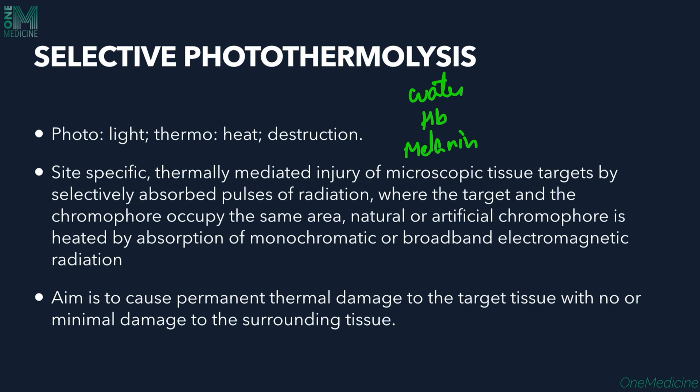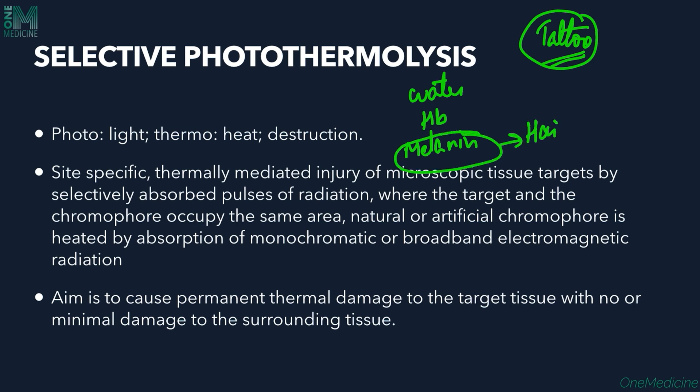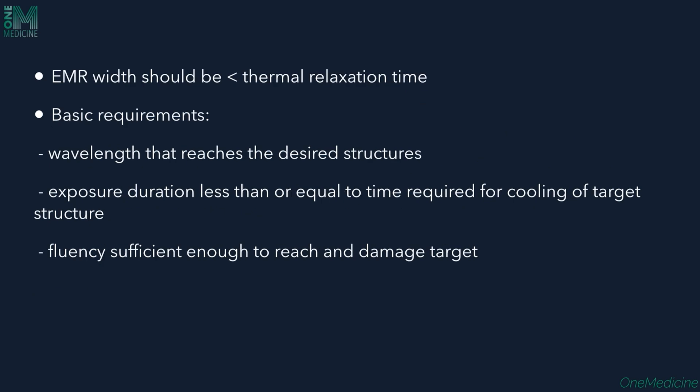An artificial chromophore, for example, would be tattoo pigment — laser light is also used for removing tattoos. In normal skin we have water, hemoglobin, and melanin acting as chromophores. For laser hair removal, we target melanin, which is present in the hair. We target this melanin in the hair to destroy the hair follicle — only pigmented hair can be treated effectively as melanin is present only in pigmented hair. Selectively only this has to be targeted, not the surrounding tissue, as selective photothermalysis says. The wavelength and fluence chosen must affect only the hair follicle, not the surrounding tissue.